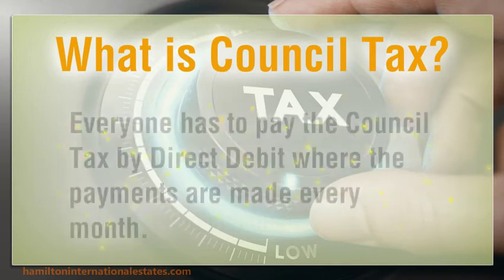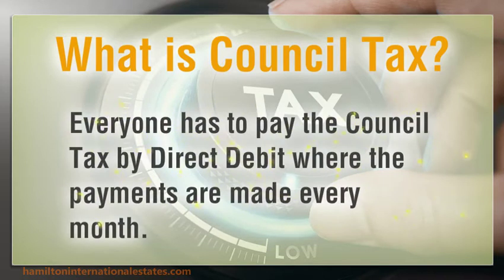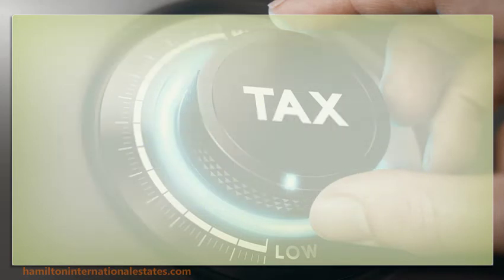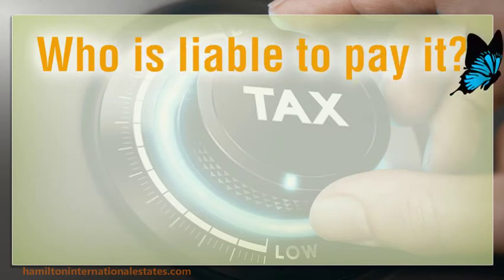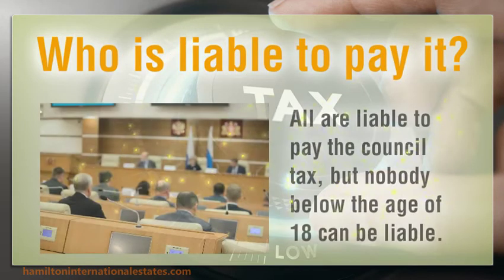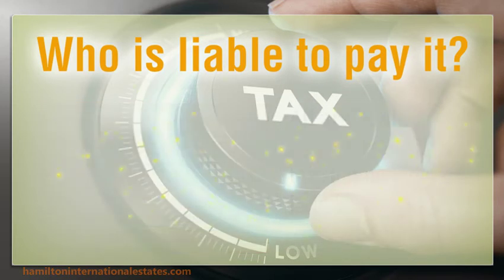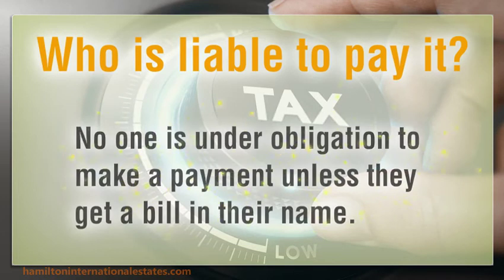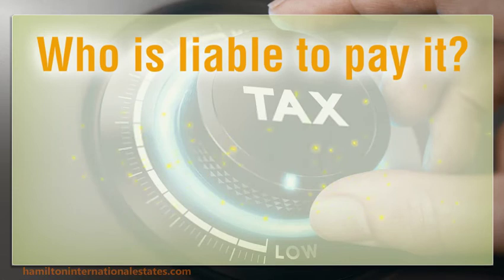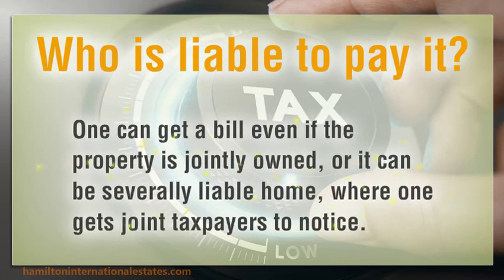Everyone has to pay council tax by direct debit, where the payments are made every month. All are liable to pay the council tax, but nobody below the age of 18 can be liable. No one is under obligation to make a payment unless they get a bill in their name. One can get a bill even if the property is jointly owned, or it can be a severally liable home, where one gets a joint taxpayers notice.